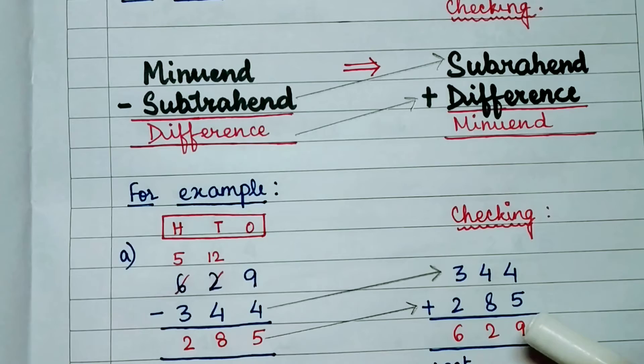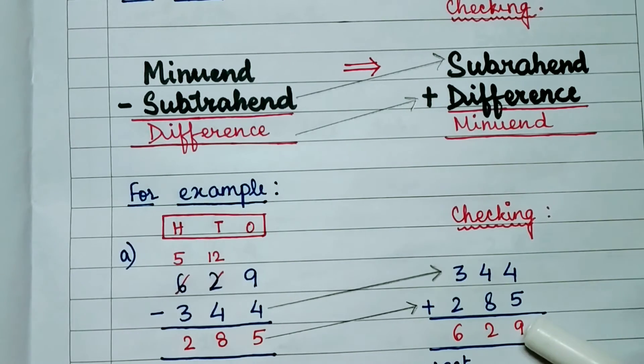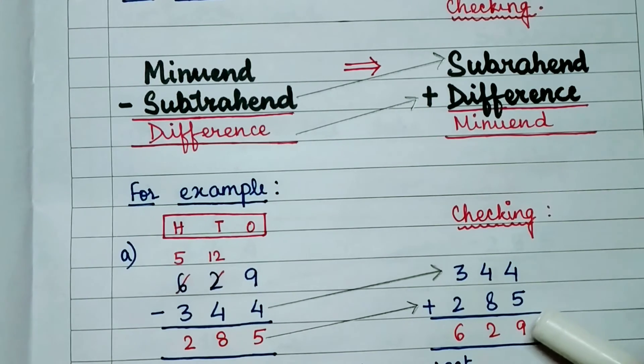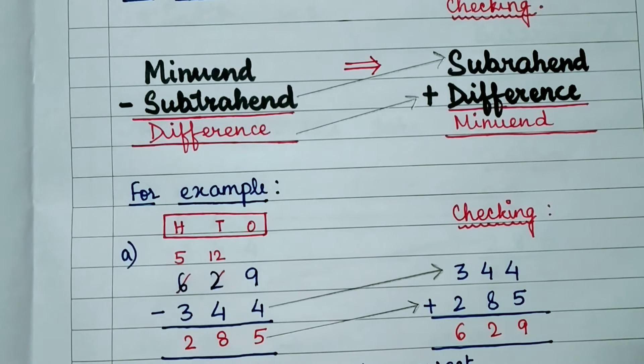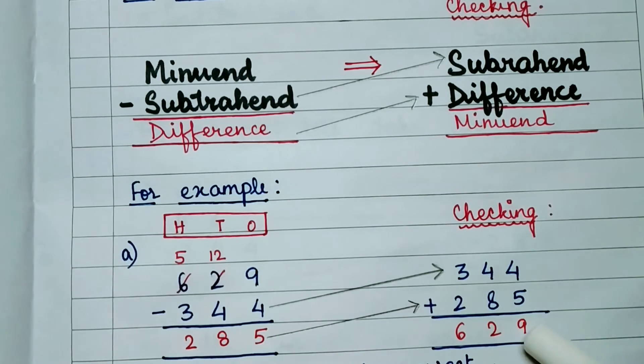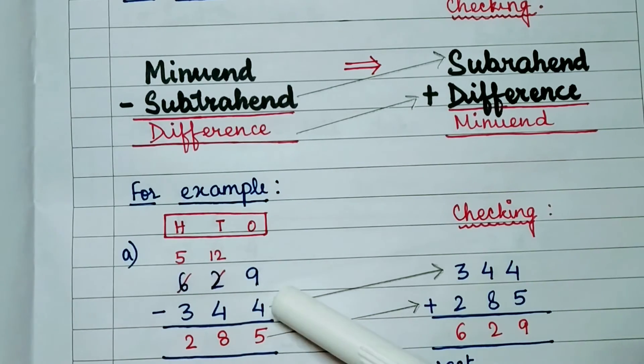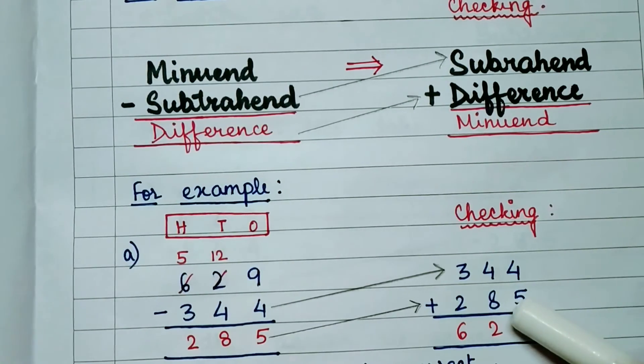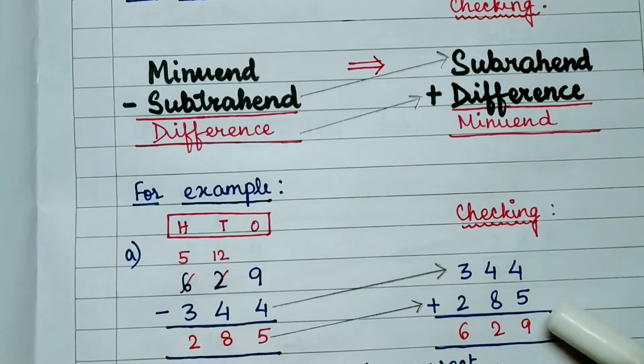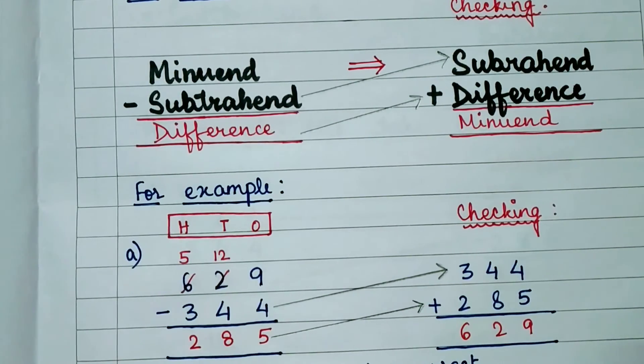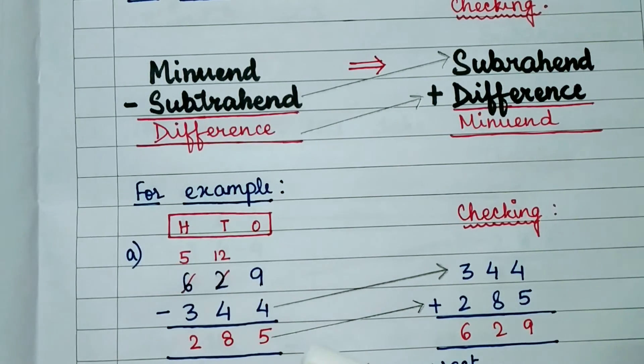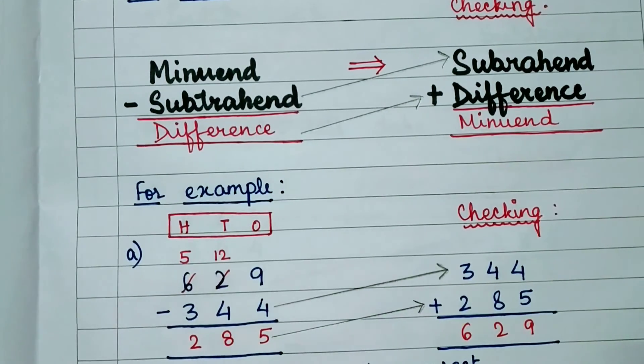If the answer obtained is equal to the minuend then our subtraction is correct. So here we can see that after adding subtrahend and difference we have got the minuend as the answer. So we can say that the answer is correct. The difference which we have obtained after this subtraction is correct.